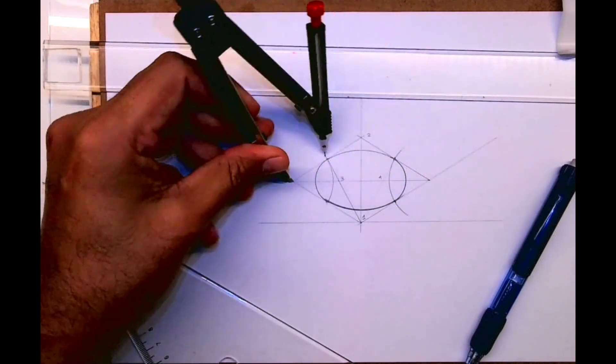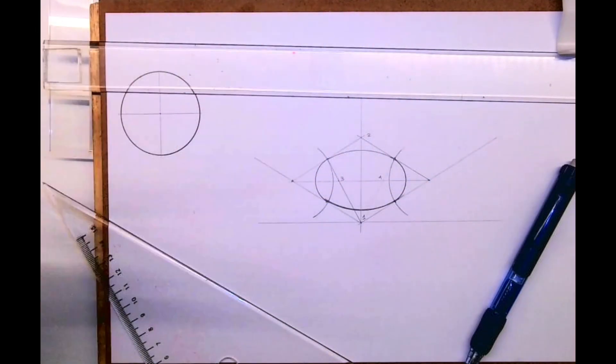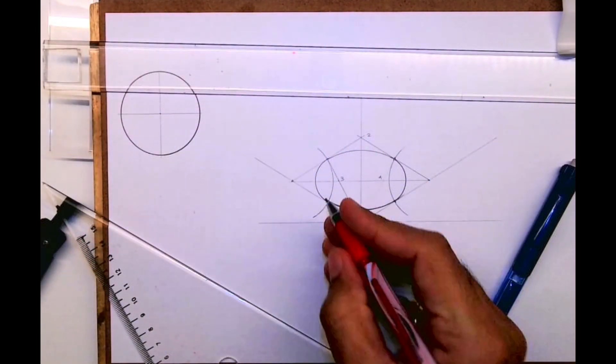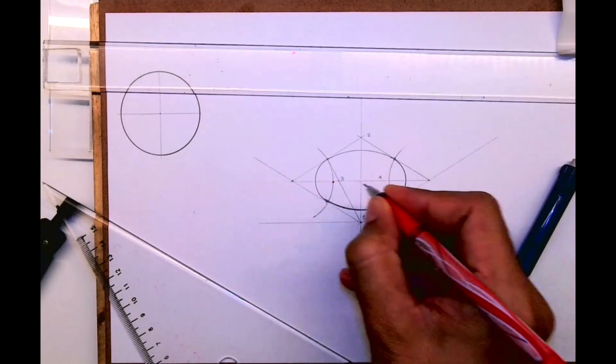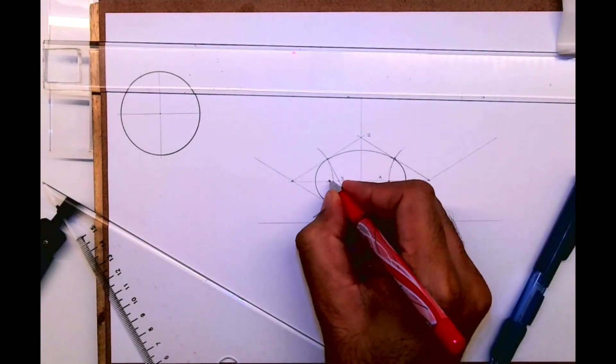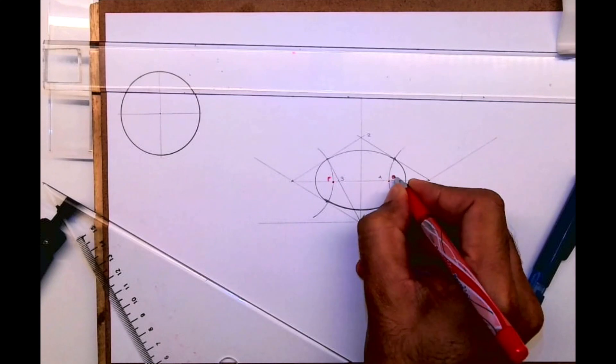So you'll get point P and Q on that longest diagonal. See, this is P, this is Q.